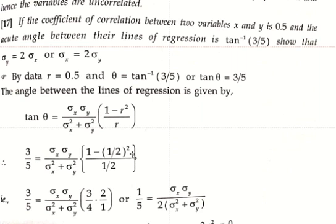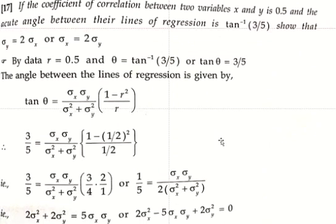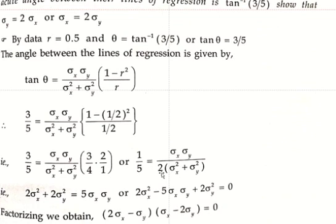Simplifying: 1 minus 1 by 2 squared equals 1 minus 1 by 4. Taking 4 as LCM gives 3 by 4. With denominator 1 by 2, the denominator of denominator goes to numerator, giving 2 over 1. So 3 by 5 equals sigma x into sigma y over sigma x squared plus sigma y squared, multiplied by 2. First multiply through by 2: 2 into sigma x squared, 2 into sigma y squared, then cross multiply.